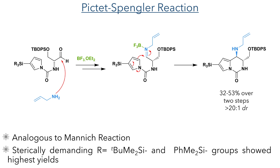Reaction of the aldehyde with allylamine under the influence of boron trifluoride first forms an imine, which is activated by coordination to boron trifluoride, making it more electrophilic, and allows it to be attacked by the pyrrole ring, forming a new carbon-carbon bond. This produced the product in a 32–53% yield depending on the silyl group used, with the larger tert-butyldimethylsilyl and phenyldimethylsilyl groups showing the highest yields. As a result, only these two compounds were taken forward to the next steps of the synthesis.